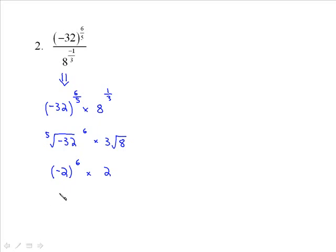Now, negative 2 to the 6 — you could enter it into your calculator, but you'll probably have a good sense of what these things equal. Negative 2 times itself 6 times is equal to 64 — positive 64, because the negative goes away. And then the cube root of 8 is just 2, so 64 times 2 is equal to 128. That would be our answer.